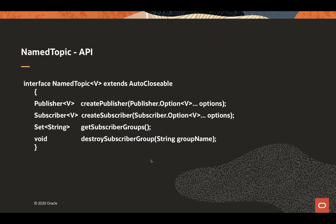The interface added to Coherence to enable messaging: the top-level entry point is NamedTopic. Notice it's auto-closable and has factory methods to create publishers and subscribers. There are options we'll go into in more detail. There are also management methods to manage subscriber groups, because the lifespan of a subscriber group is longer than any subscriber group member. You need to know which subscriber groups are active on a topic, and you can actively reset it by destroying the subscriber group.